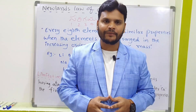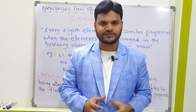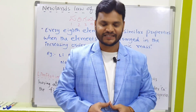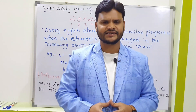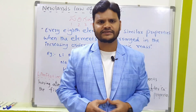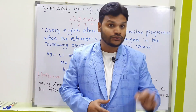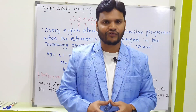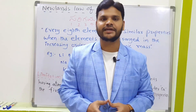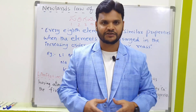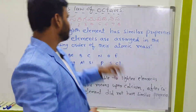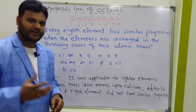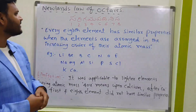After the limited attempt of Döbereiner's triads, one more scientist came — his name is Newland. He gave the concept called Newland's Law of Octaves. 'Oct' means eight. To illustrate, consider the musical scale: Sa, Re, Ga, Ma, Pa, Dha, Ni, Sa — everybody knows it.